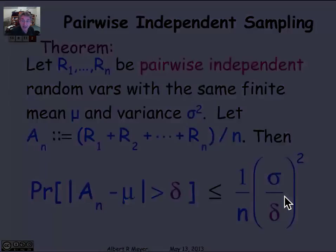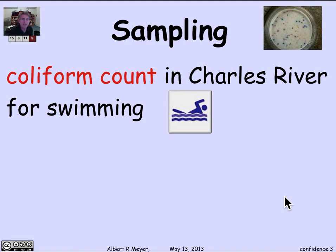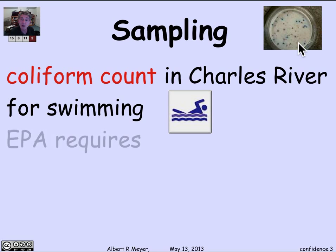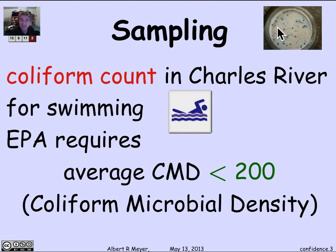Let's think about swimming in the Charles. The Charles has a coliform count—some rather undesirable bacteria associated with fecal matter. That's a Petri dish showing a sample of bacteria you might culture to see what's going on. The Environmental Protection Agency requires that the average CMD, the coliform microbial density, is less than 200.